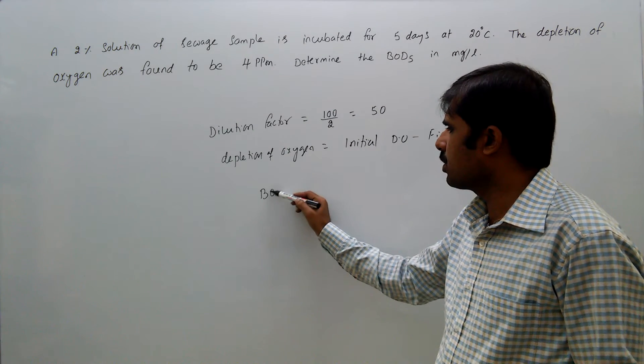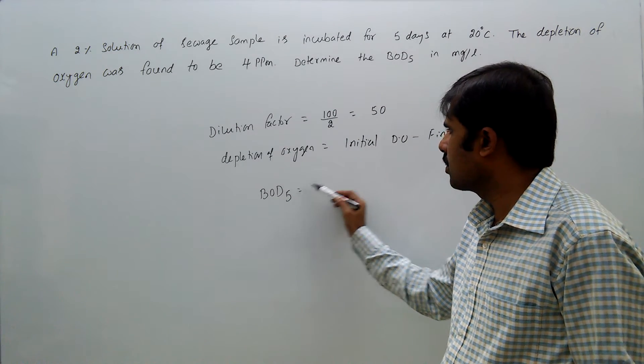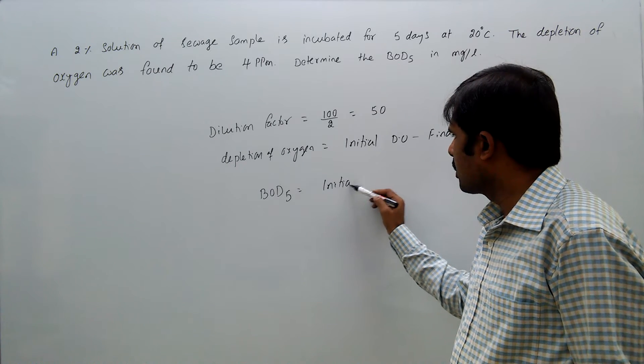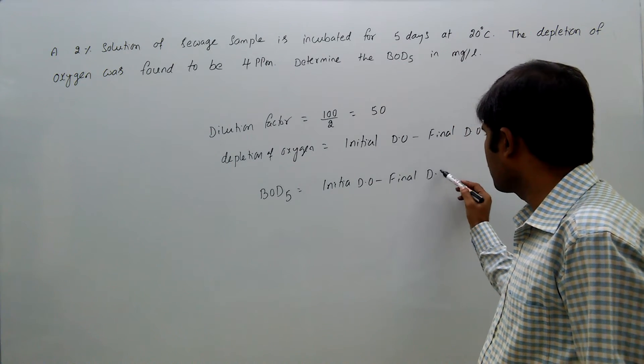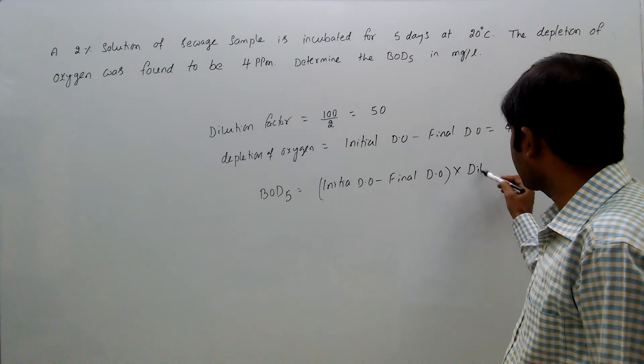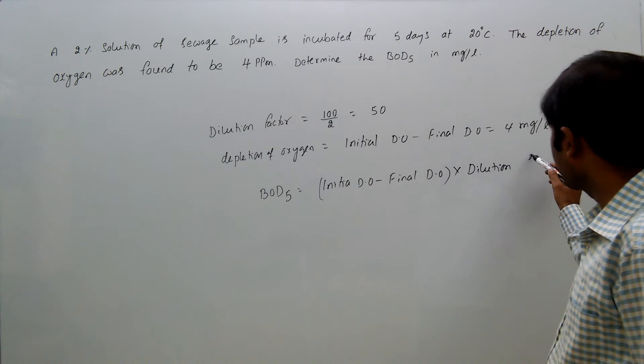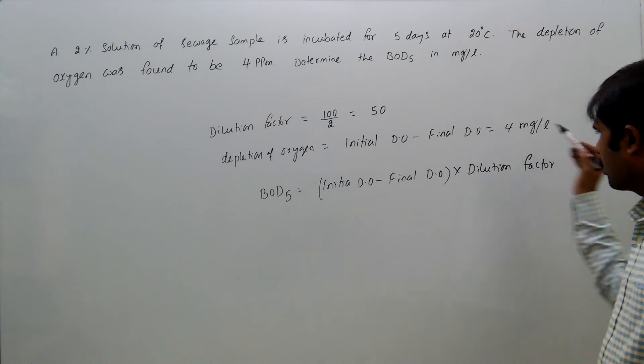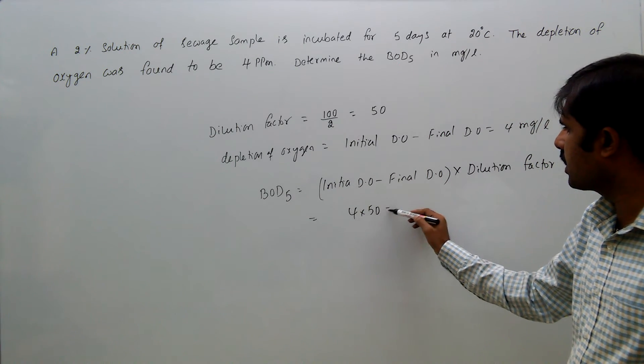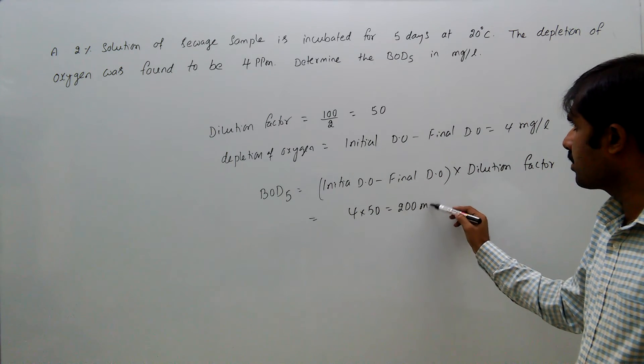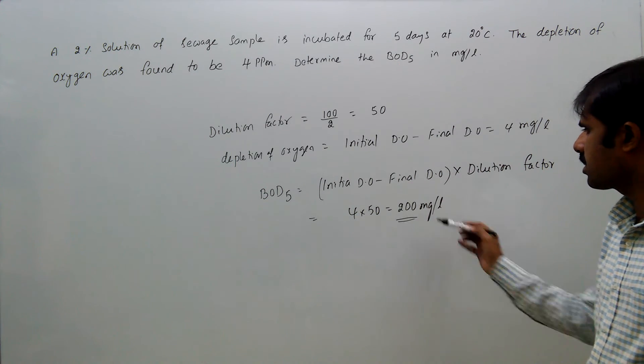Therefore, BOD5 equals initial DO minus final DO times dilution factor. That is 4 times 50, which equals 200 mg per litre. So 200 is the answer.